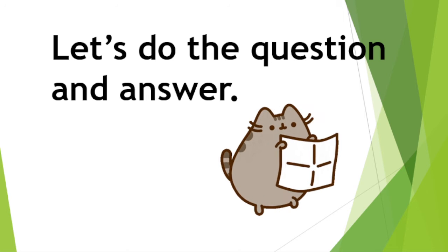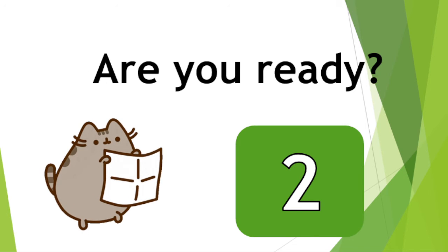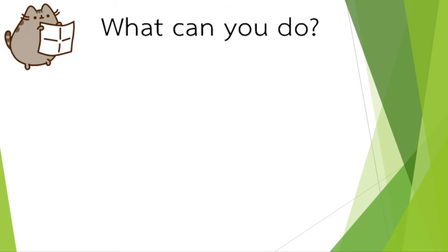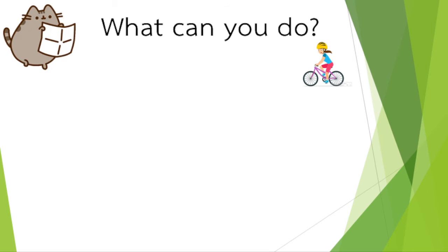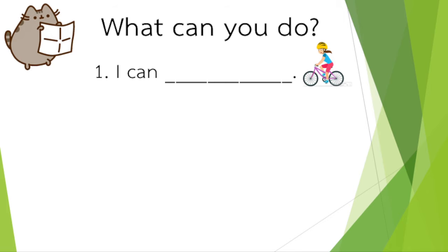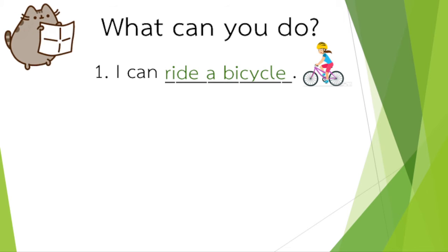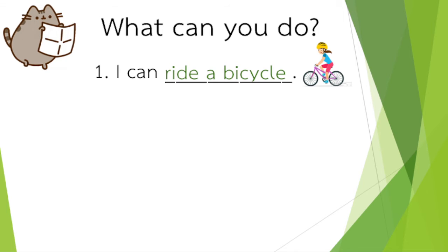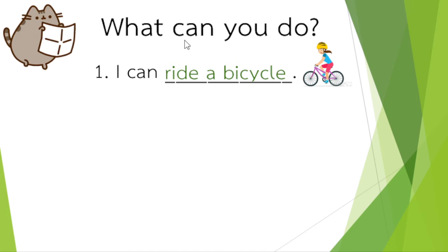Let's do the question and answer. Are you ready? What can you do? What can you do? Picture number 1 — I can blank. What do you think is the correct answer? Very good: ride a bicycle. I can ride a bicycle. I can ride a bicycle. What can you do? What can you do? I can ride a bicycle. I can ride a bicycle.